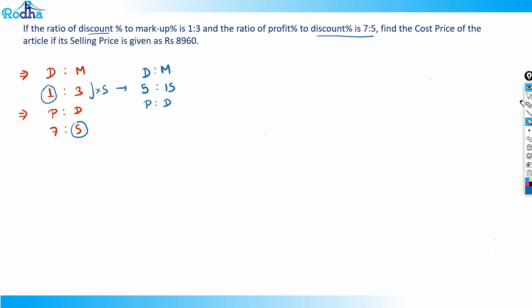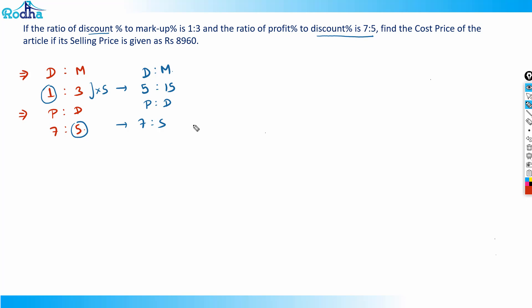And the profit to discount percentage ratio remains 7:5. Since discount is now 5 in both ratios, we can assume common terms. Discount becomes 5x, markup percentage becomes 15x, and profit percentage becomes 7x. All values are now in terms of x.